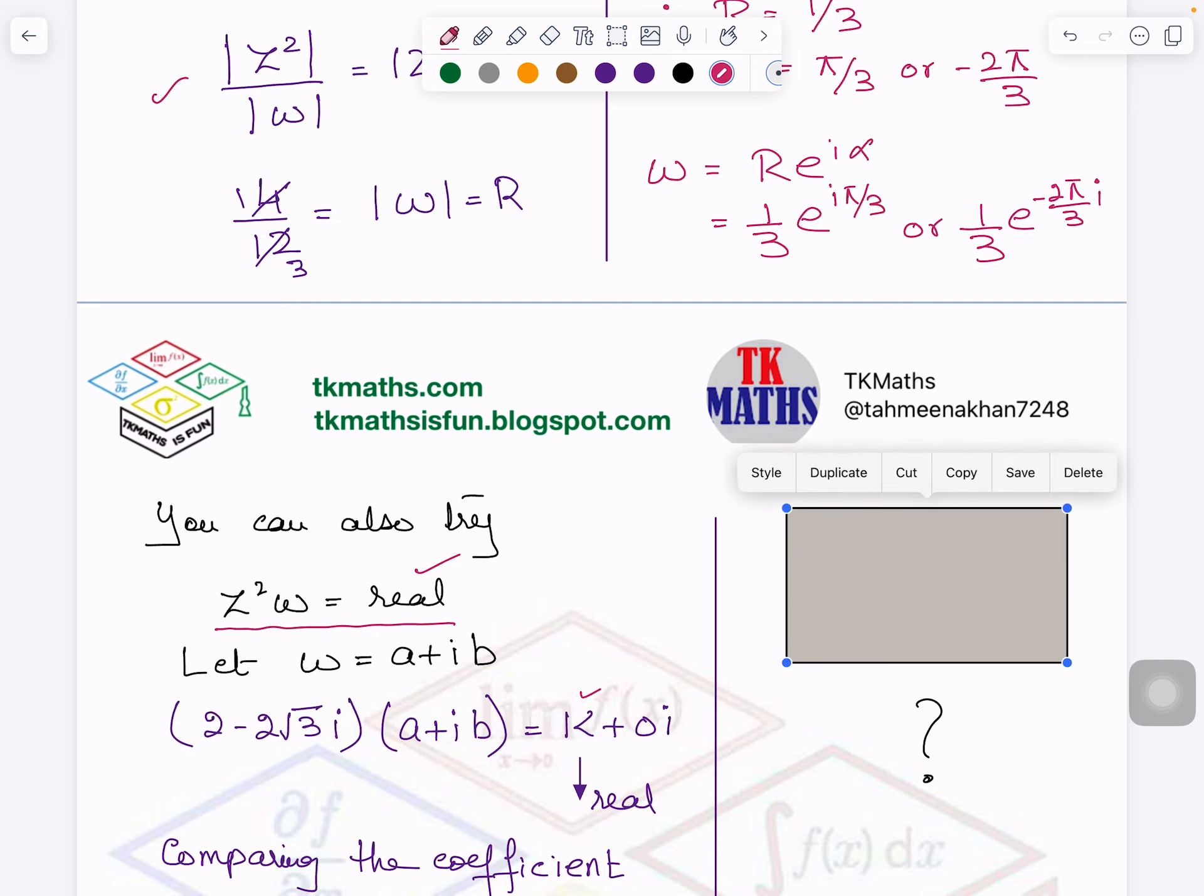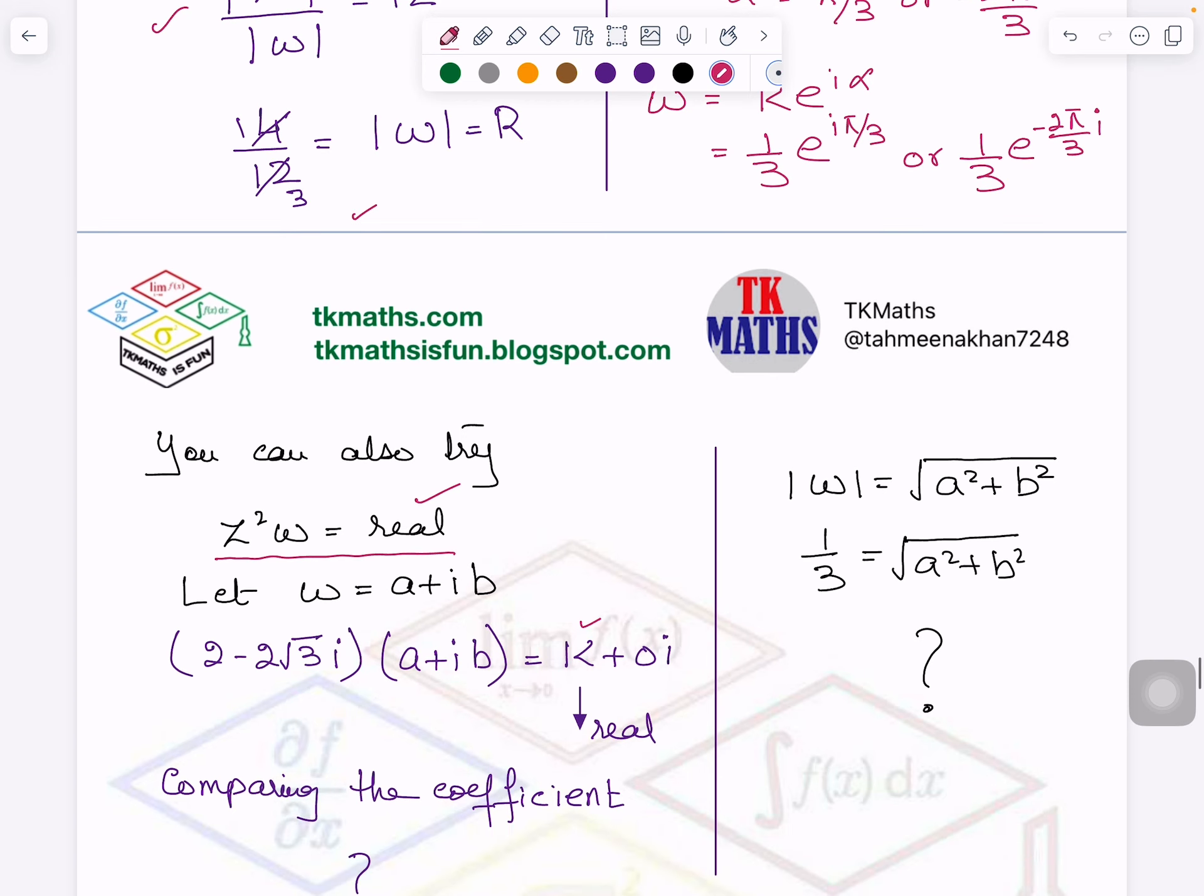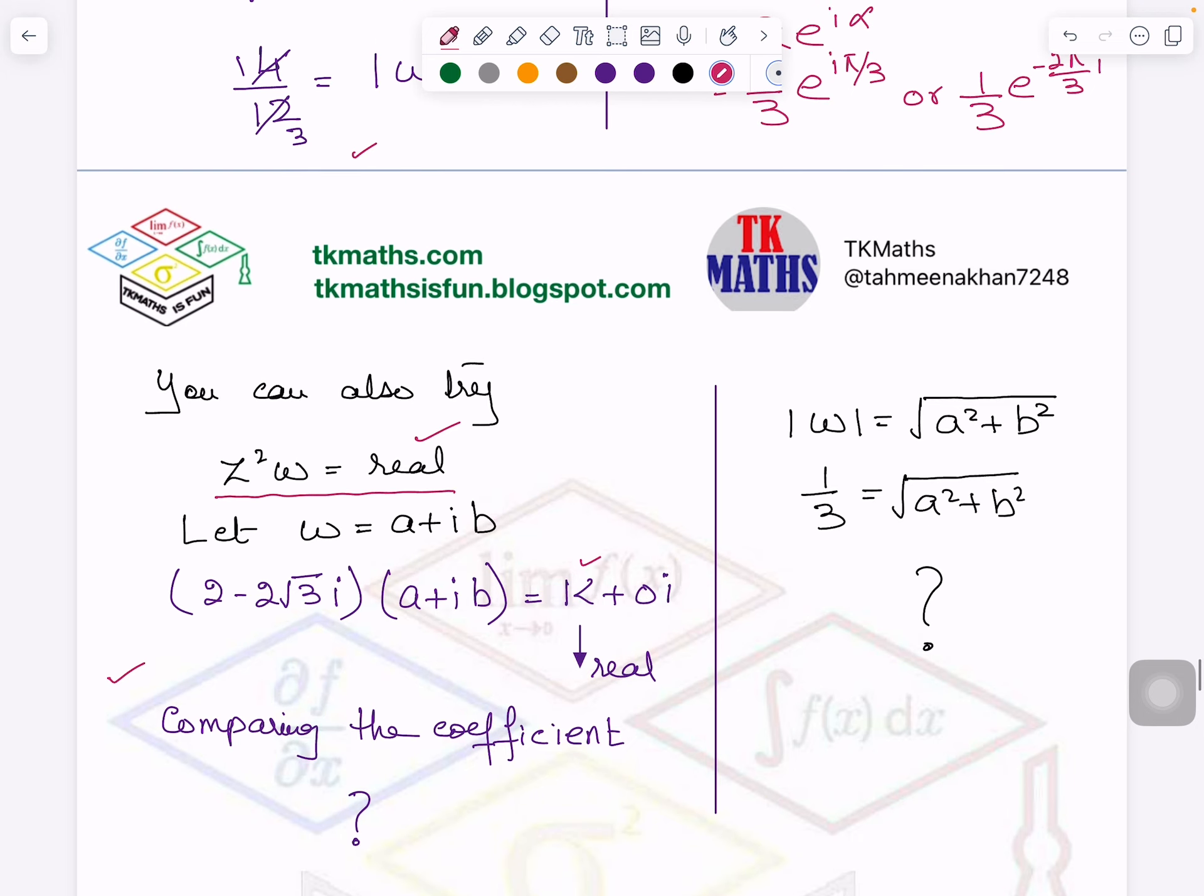And the second equation I can get from here. Modulus of ω equals A square plus B square. And modulus of ω equals 1/3. We have seen here. So after that, you have to solve it simultaneously. Here you have to compare the coefficient. It is a very long method. I am not solving it. I am just giving you an idea. If you want to try it out, you can.